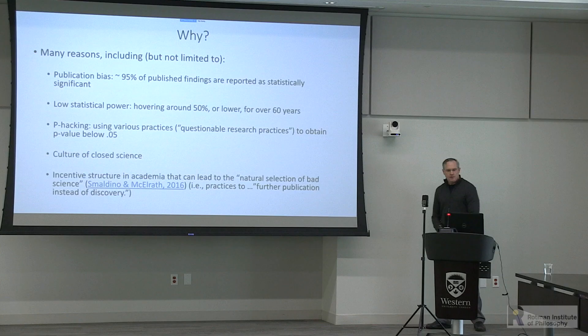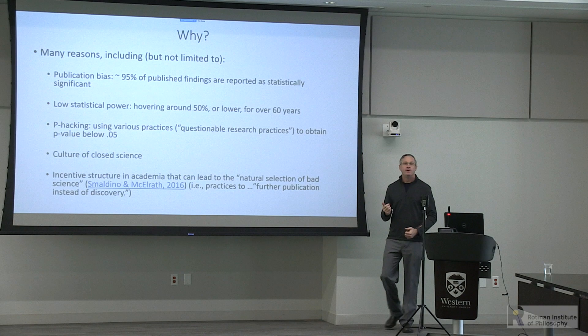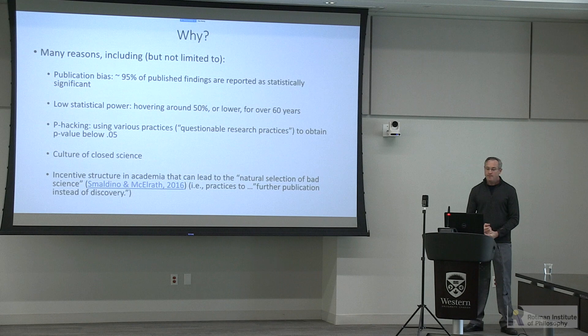There is also what some people call a perverse incentive structure in academia that can lead to what Smaldino and McElreath called 'the natural selection of bad science' — practices that further publication instead of discovery. They used evolutionary theory and natural selection modeling, building in certain assumptions, and found that incentive structures focused on publishing more can over time lead to less optimal scientific practices.